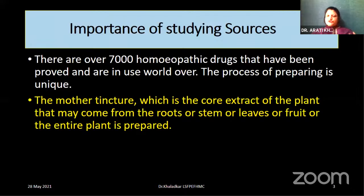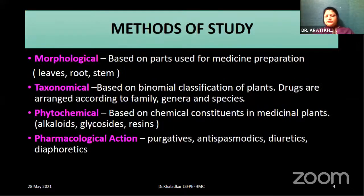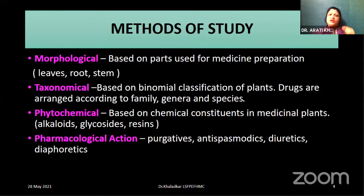The importance of studying sources is that there are over 70,000 homeopathic drugs in the world. The most important part lies in the preparation of the mother tincture, which is the core extract from any part of the plant — animal kingdom, land kingdom, nosode, sarcode, or even the entire plant. If you see the methods of study, we will see everything at a glance, because we have a lot of things to be studied today — presentations and illustrations which will give you better grasp and understanding. If we visualize a particular illustration, if you see that particular plant in total, you will be able to remember the example very keenly.